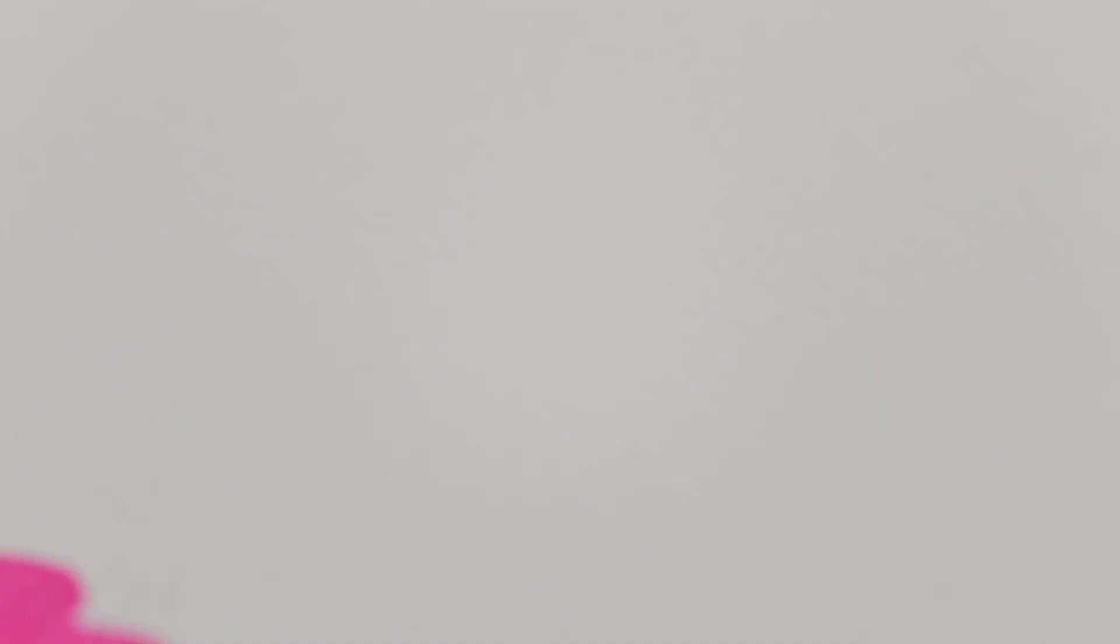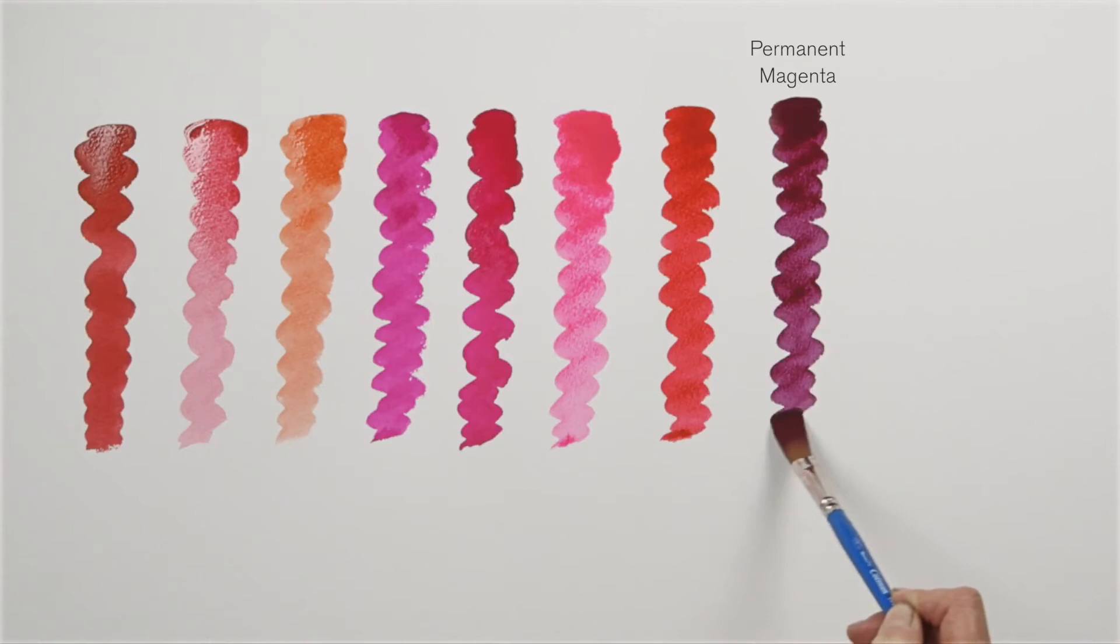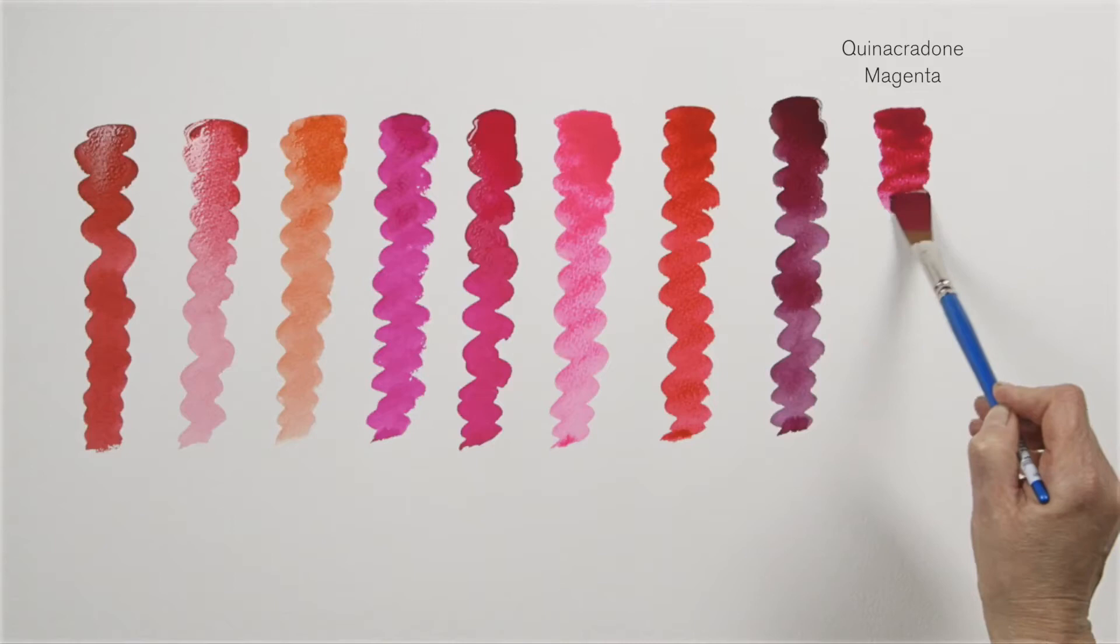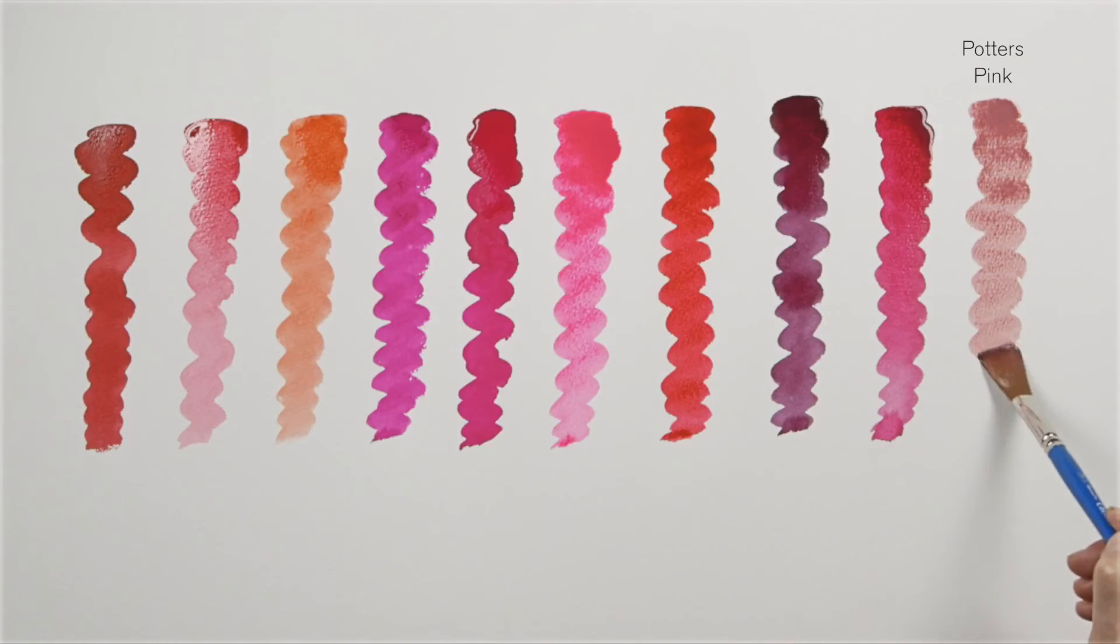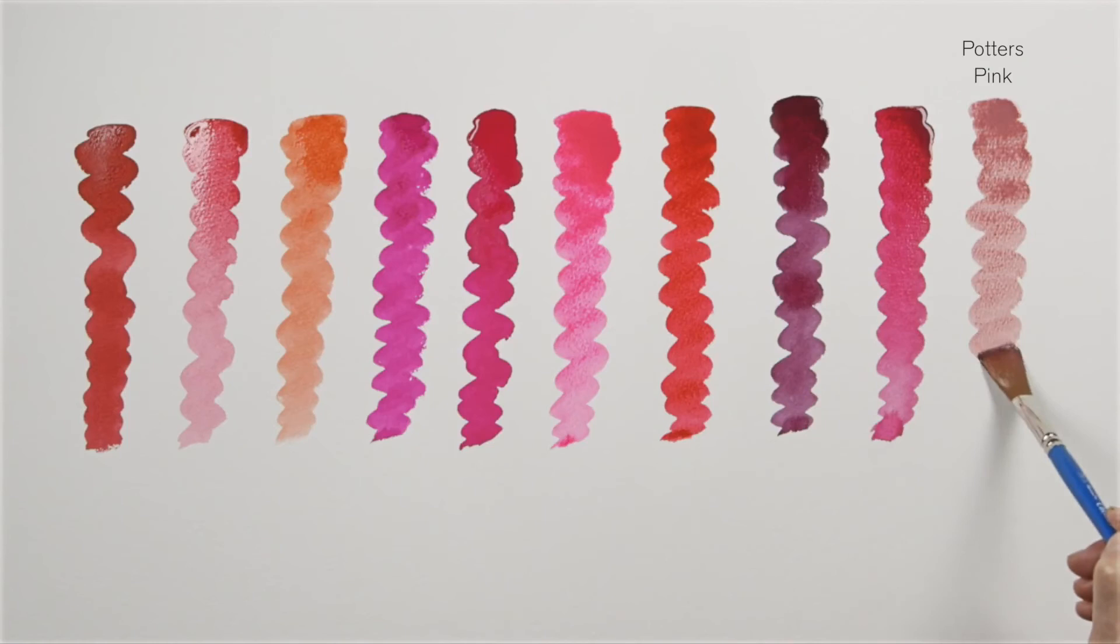Other synthetic alternatives to magenta include permanent magenta which is more permanent than the original and also this quinacridone magenta. And finally we have potters pink named because it was often used in ceramics and is a chrome and tin combination.